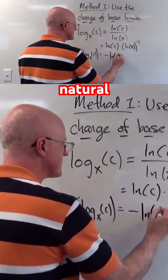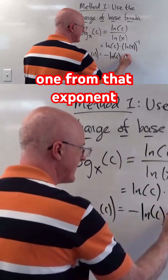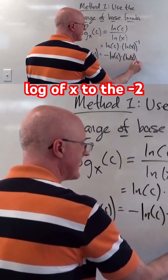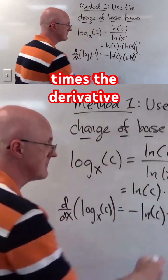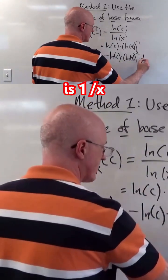I get negative natural log of c times, I need to subtract 1 from that exponent, natural log of x to the negative 2 power, and then I need to multiply by the chain rule times the derivative of natural log of x, which is 1 over x.